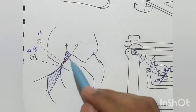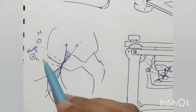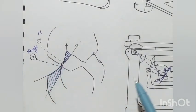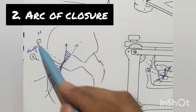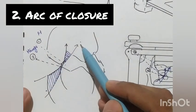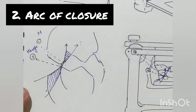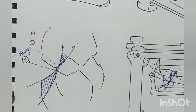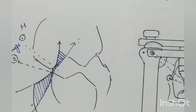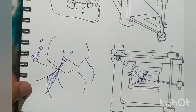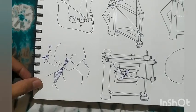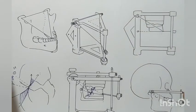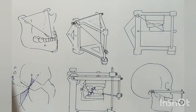This may not make much difference in removable prostheses, but in fixed prostheses these interferences create a lot of problems. That is why we also use the face bow. So the second use of the face bow is that it provides the correct arc of closure to our Hanau articulator. These are the two uses of the face bow. I hope the concept is clear, and if you have any suggestions or queries you can let me know in the comment section.